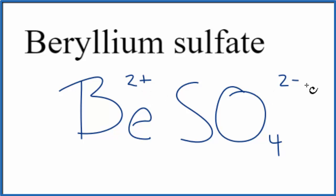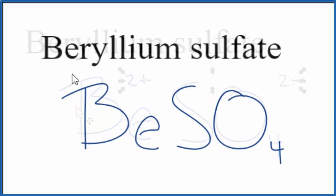So 2-plus, 2-minus, that adds up to 0. So this is the formula for beryllium sulfate, B-E-SO4.